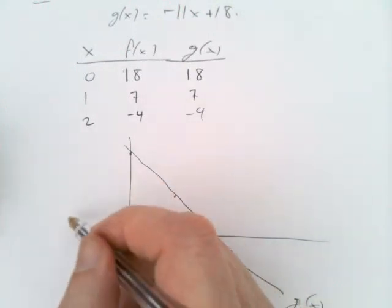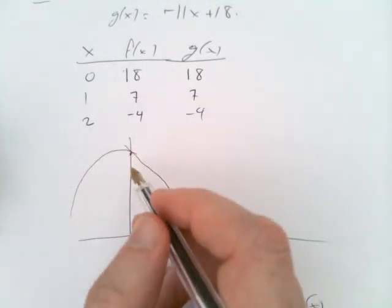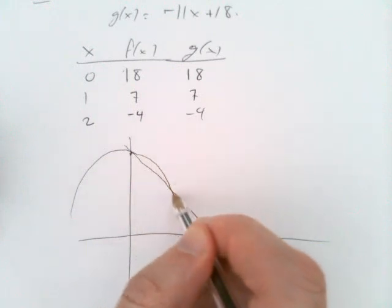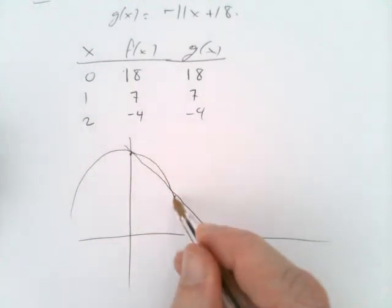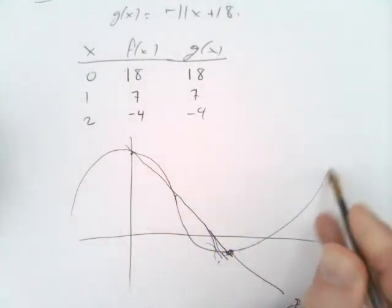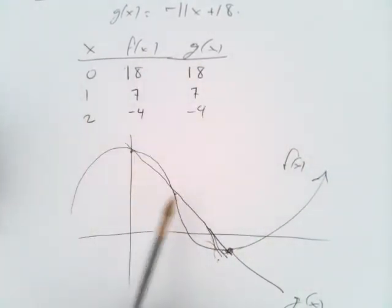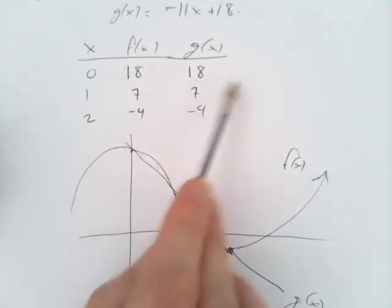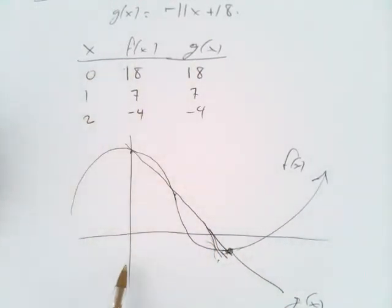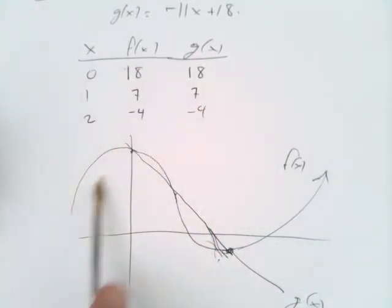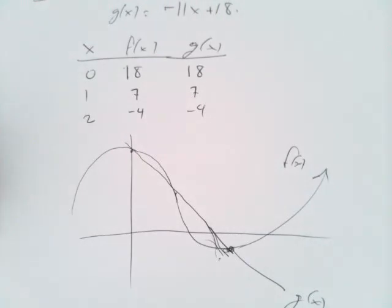But f looks something quite different. F has a much more complicated picture going on. It looks something like this. And that's not obvious. From the information we have here, we couldn't tell these two functions apart. F and g look exactly the same as far as these numbers are concerned.